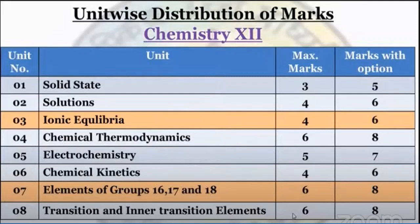Unit-wise distribution of marks. Chapter 1: Solid State — maximum marks 3, along with option 5. Chapter 2: Solutions — maximum marks 4, marks with option 6. Chapter 3: Ionic Equilibria — maximum marks 4, along with option 6. Chapter 4: Chemical Thermodynamics — maximum marks 6, marks with option 8.